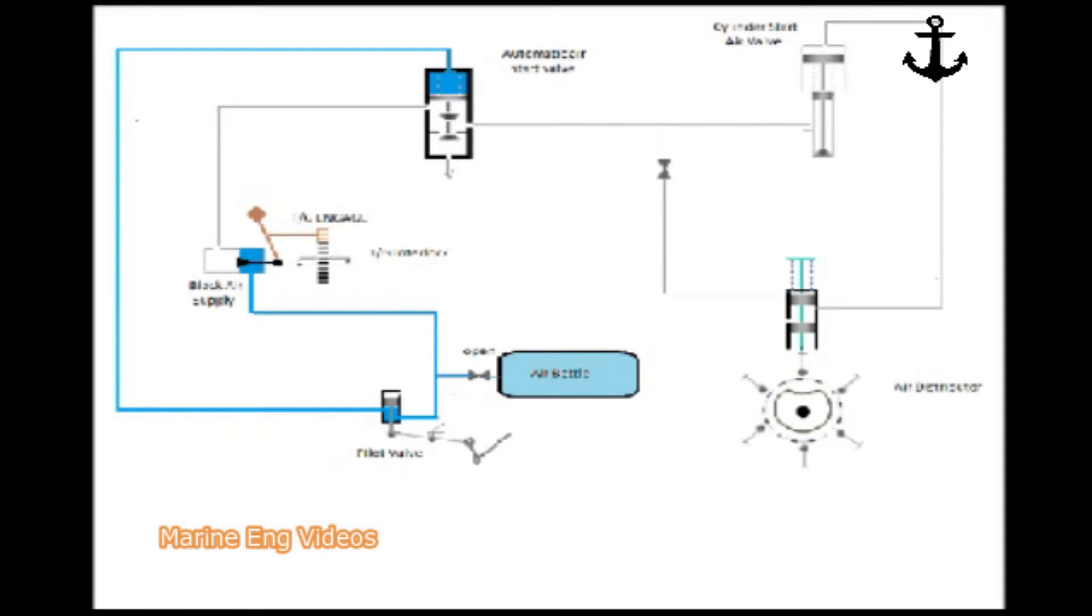To start the main engine, first the turning gear needs to be disengaged. This will deactivate the interlock and the air will be supplied to the automatic air start valve.